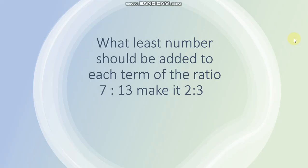Next question is what least number should be added to each term of the ratio 7 is to 13 to make it 2 is to 3? Answer is 5.